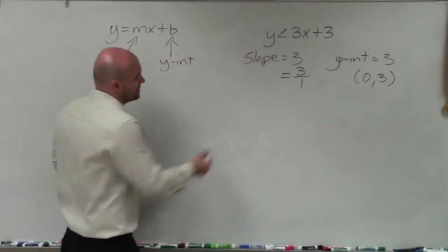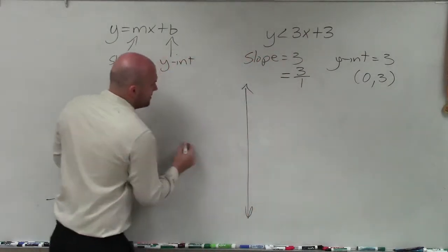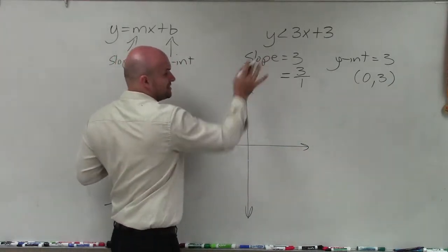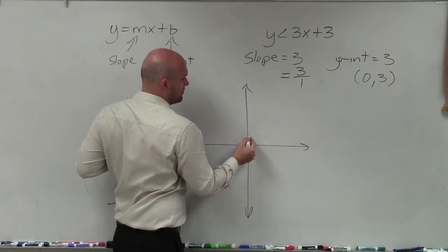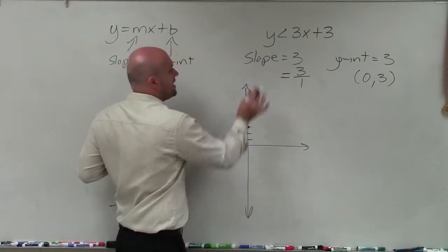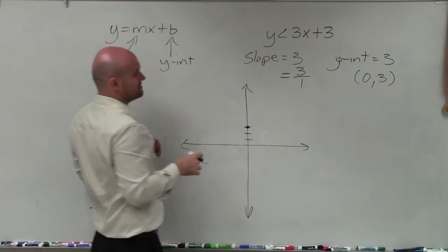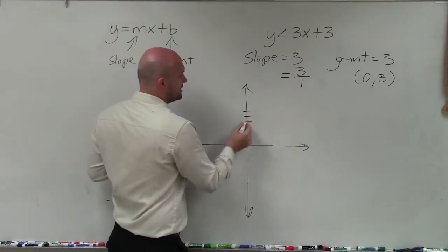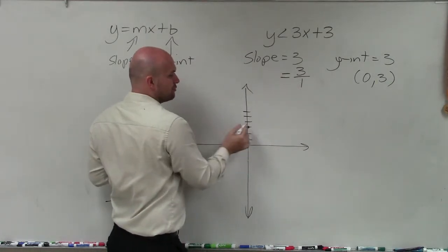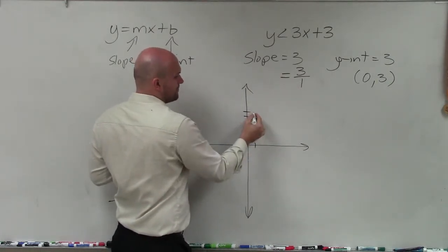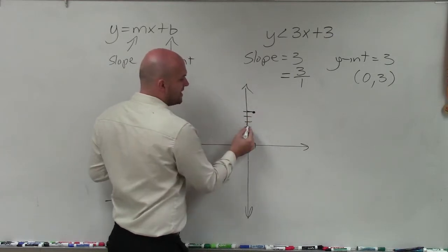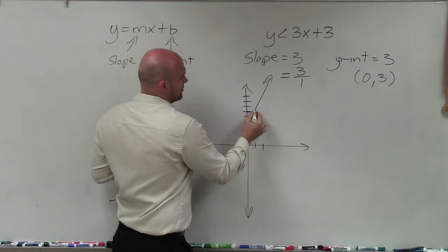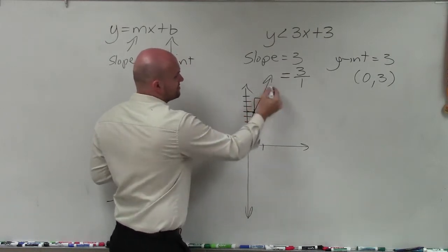To graph this inequality, all we're going to do is plot my y-intercept, which is (0, 3) — so I go up 1, 2, 3. Then I'm going to follow my slope, which says the change in y is positive 3, so I go up 3, and the change in x is 1, so I go over 1. I go up 3 over 1, and then I can simply connect and follow that pattern.